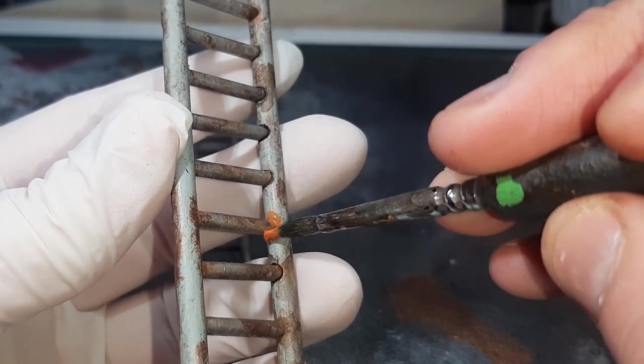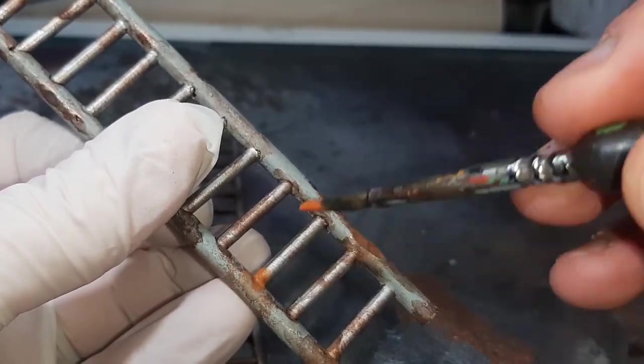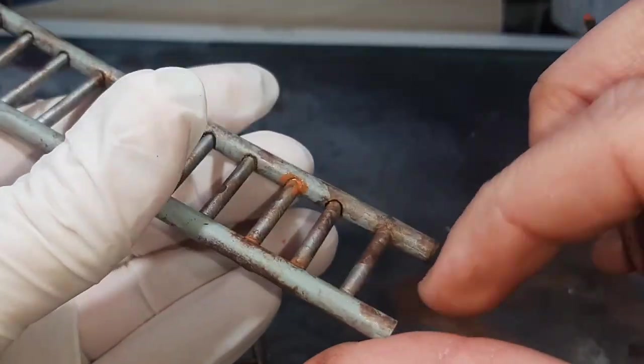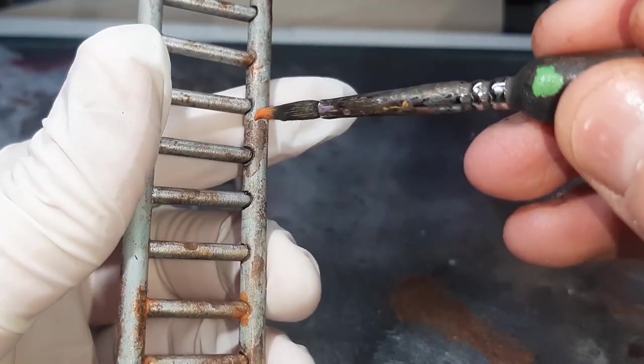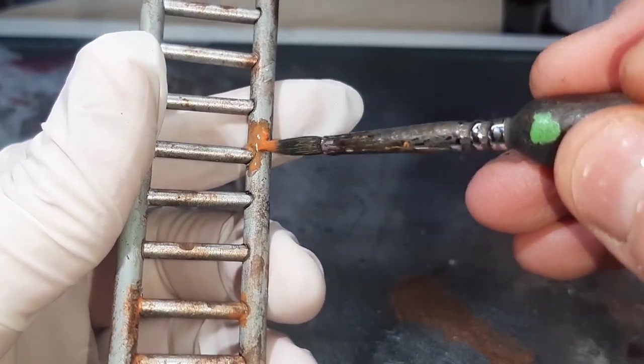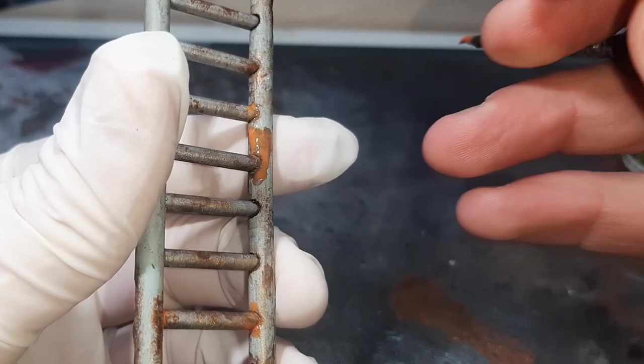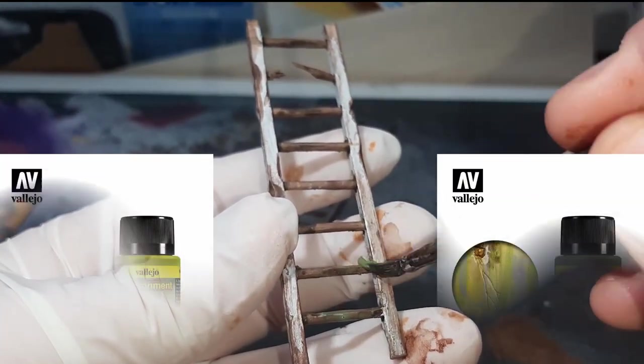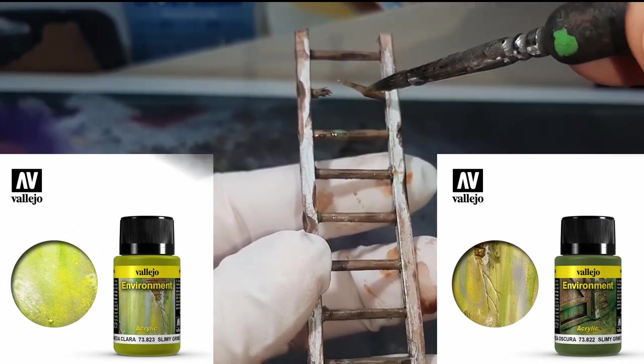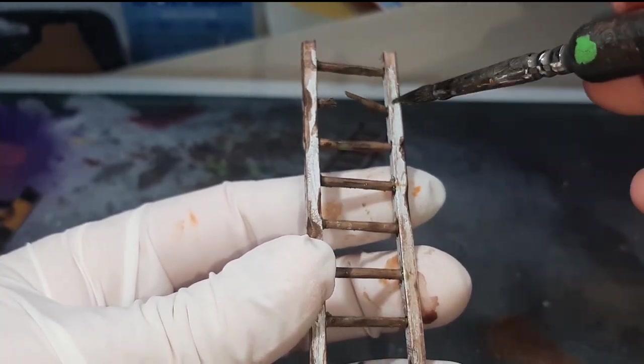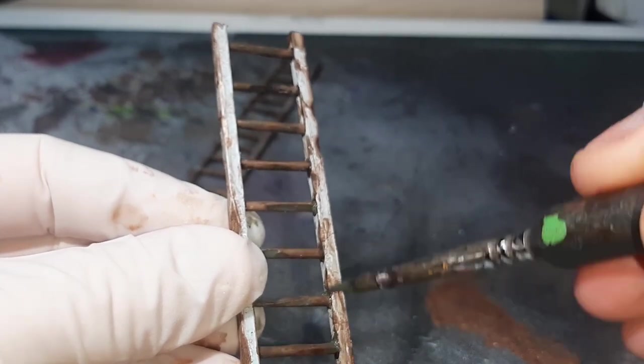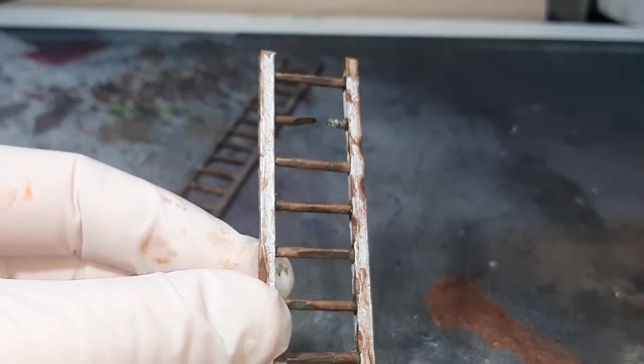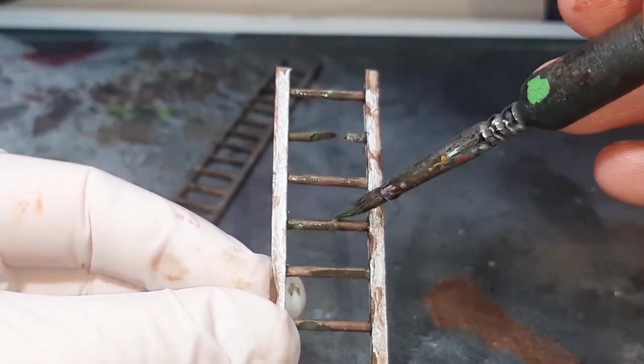And the last colors to apply to the ladders are Slimy Grime Light and Slimy Grime Dark from Vallejo. Again with these two colors, like the rust before, I applied them very sparingly and slowly built up the colors, alternating between the two greens until I was happy with the result.